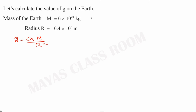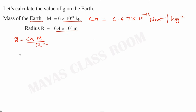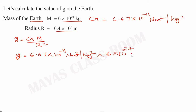The value of G is 6.67 into 10 raised to minus 11 newton meter squared per kilogram squared. The mass of the Earth is 6 into 10 raised to 24 kilograms. The radius of the Earth is 6.4 into 10 raised to 6 meters.